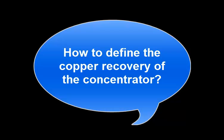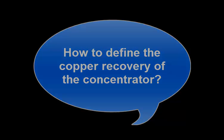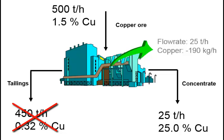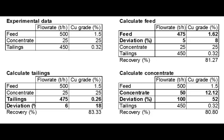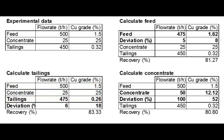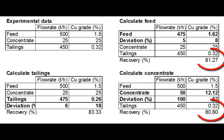What is the method to determine the copper recovery of the concentrator? One method is to disregard the measurement of one of the streams and to do the calculation based on the two other streams. For example, the mass flowrate and copper content of the tailings could be calculated from the feed and the concentrate. The mass flowrate is now 470 tons per hour and the copper content is 0.26%. The calculated copper recovery is 83.33%. It is also possible to calculate the feed and the concentrate, resulting in two different copper recoveries.